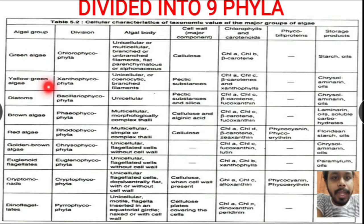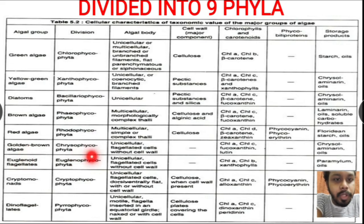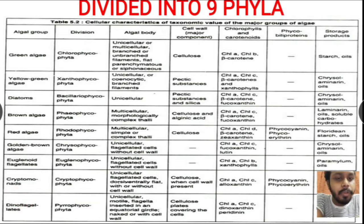The nine phyla are: green algae or chlorophyta, yellow-green algae or xanthophyta, diatoms or bacillariophyta, brown algae or phaeophyta, red algae or rhodophyta, golden algae or chrysophyta, euglenoid flagellates or euglenophyta, cryptomonads or cryptophyta, and dinoflagellates or pyrrophyta.